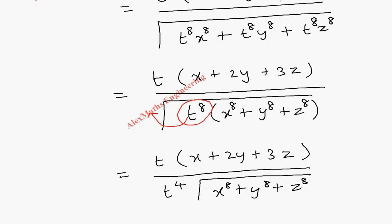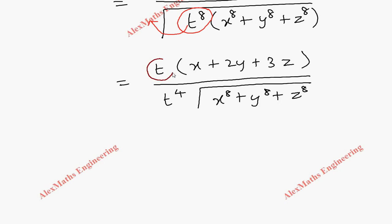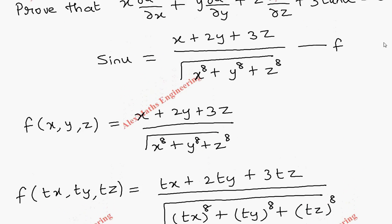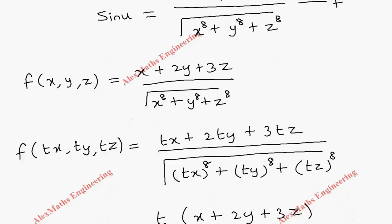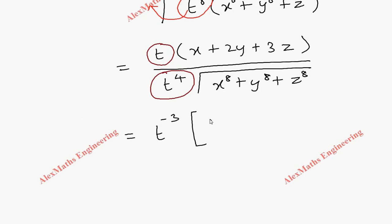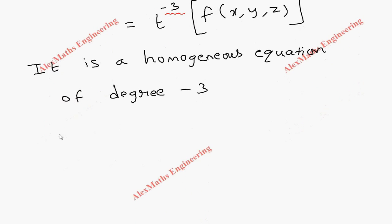Now simplifying these two t terms: t in the numerator divided by t power 4 in the denominator gives t to the power of 1 minus 4, which is t power minus 3. The remaining term is our original function f(x, y, z). So f(tx, ty, tz) = t power minus 3 times f(x, y, z), which means it is a homogeneous function of degree minus 3.